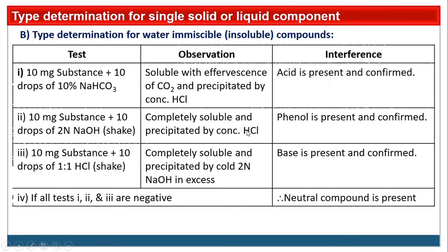If all three tests — 1, 2, and 3 — are negative, then our compound is neutral. Conclude that a neutral compound is present. In this way, type determination for water-insoluble or water-immiscible compounds is done. Reagents to remember: test for acid — 10% NaHCO₃; test for phenol — 2 normal NaOH; test for base — 1:1 HCl.